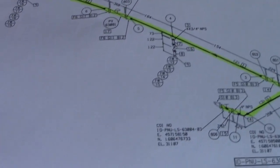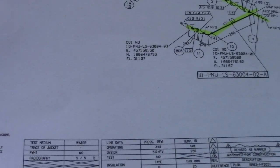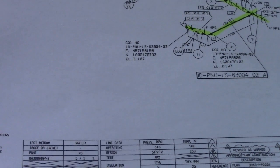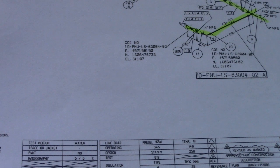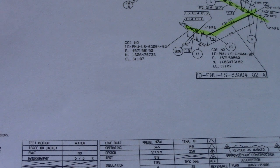Number six is insulation type. You can see the insulation type here in this table. Next, number seven is NDT requirements. You can also see the NDT requirements here in this table — showing percentages such as 5%, 10%, and 100%.